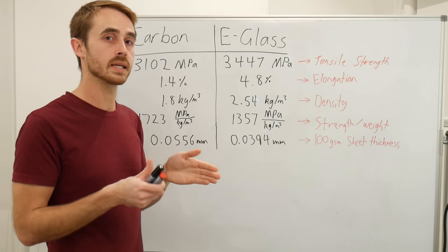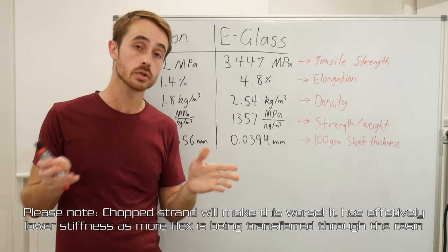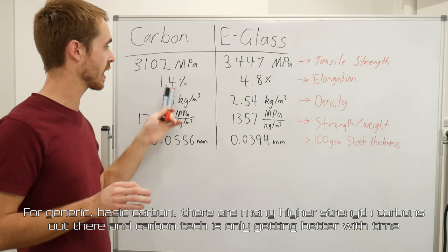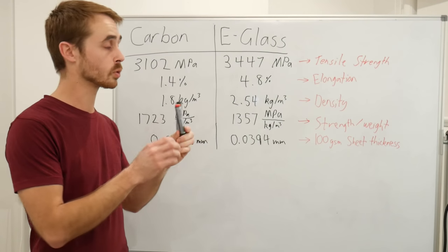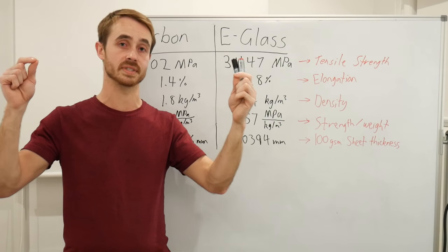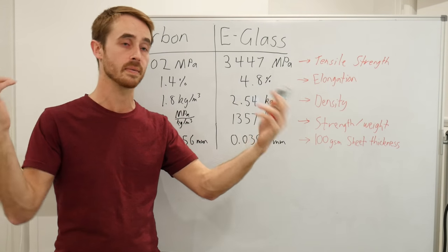I'm going to assume that all the fibers are running parallel, so not chopped strand glass. Carbon is weaker than e-glass ever so slightly. It is much stiffer, so it breaks at an earlier point - carbon you can stretch it for 1.4% of its total length before it snaps. Glass you can stretch for about 5% before it snaps.